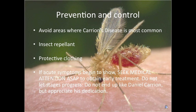There is no current vaccine for Carrion's disease. Strategies for prevention include avoiding areas where Carrion's disease is most common and its vector is most populated. Insect repellent could help deter the vectors from biting you, and protective clothing could also prevent bites. If acute symptoms begin to show, seek medical attention to obtain early treatment. Do not let stages progress to chronic. Do not end up like Daniel Carrion, but appreciate his slight insanity and his dedication to science.